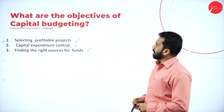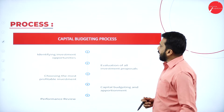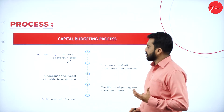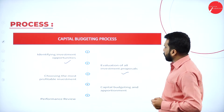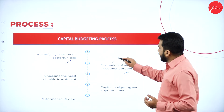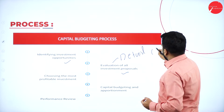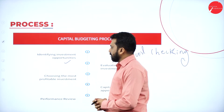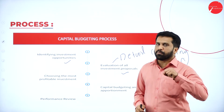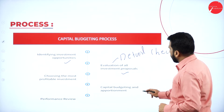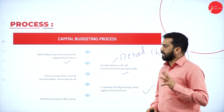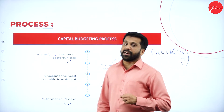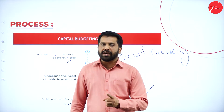Now what are the processes? There are almost five processes. First: identifying investment opportunities. Second: evaluation of all investment proposals — evaluation means detailed checking. Third: choosing the most profitable investment — from four or five options, whichever gives you more profit, go for that. Fourth: capital budgeting and apportionment. Fifth: performance review — once you have selected, evaluated, and invested, you have to review whether your decision was good or bad.